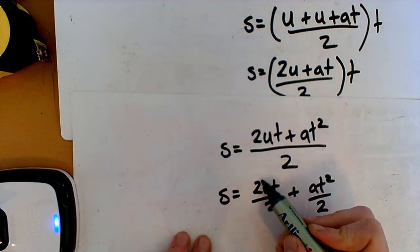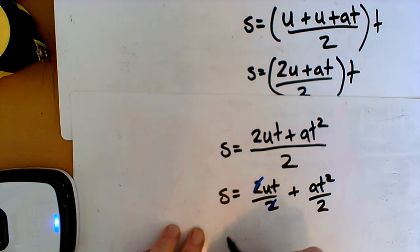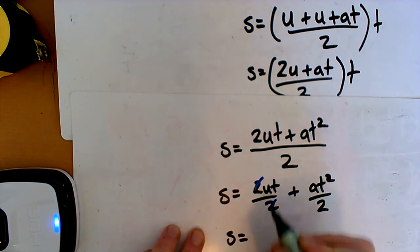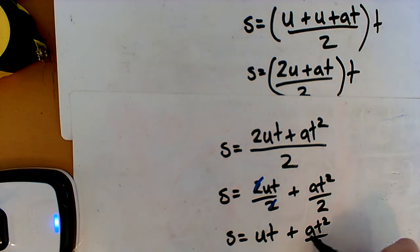So we can just cancel those twos. And we're then left with our answer. So let's just cancel. It's just left with UT plus AT squared over 2. So this is the same. This is the same as having a half multiplied by this.